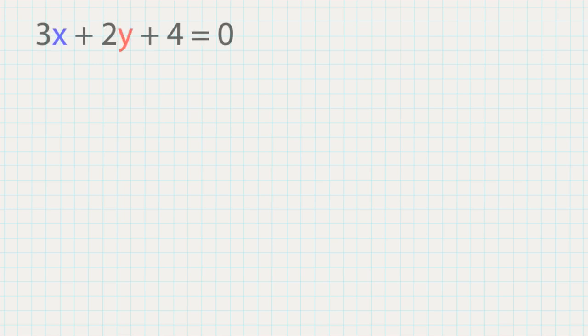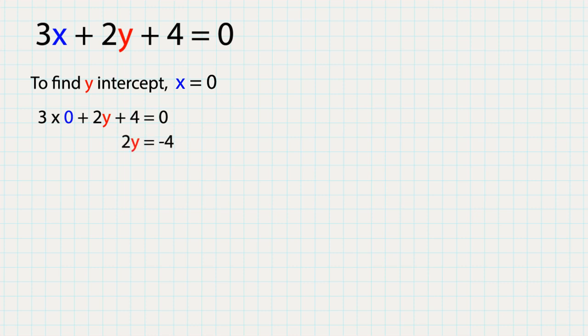Let's try an example. We have a linear function 3x plus 2y plus 4 equals 0. To find y-intercepts, simply sub x equals 0. So 3 times 0 plus 2y plus 4 equals 0. 2y equals negative 4. y equals minus 2.